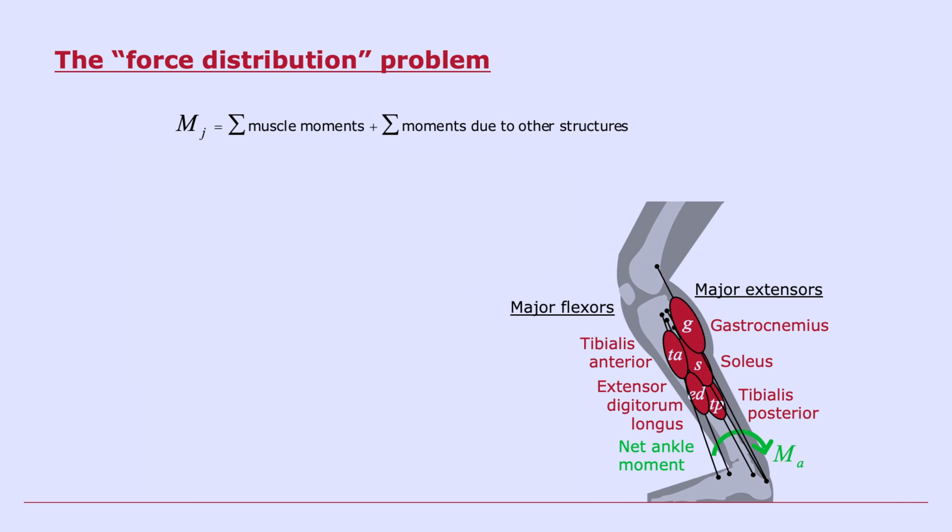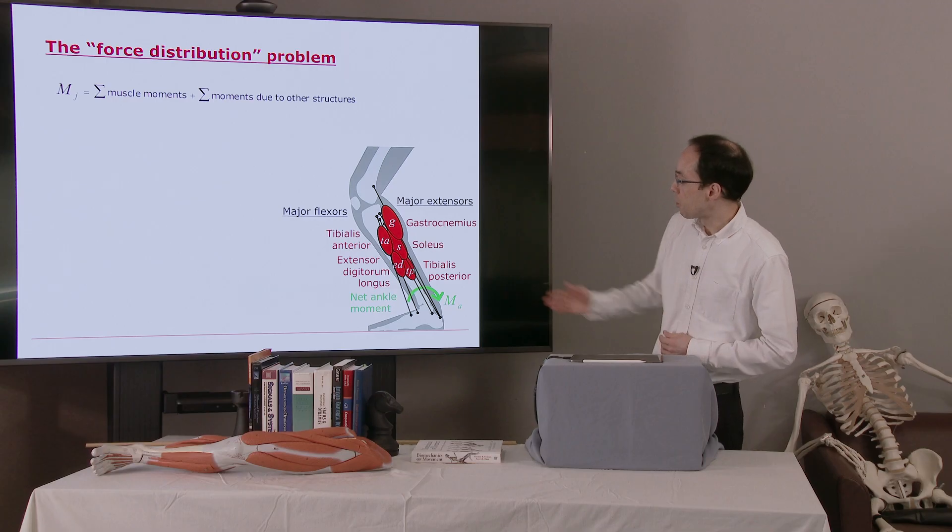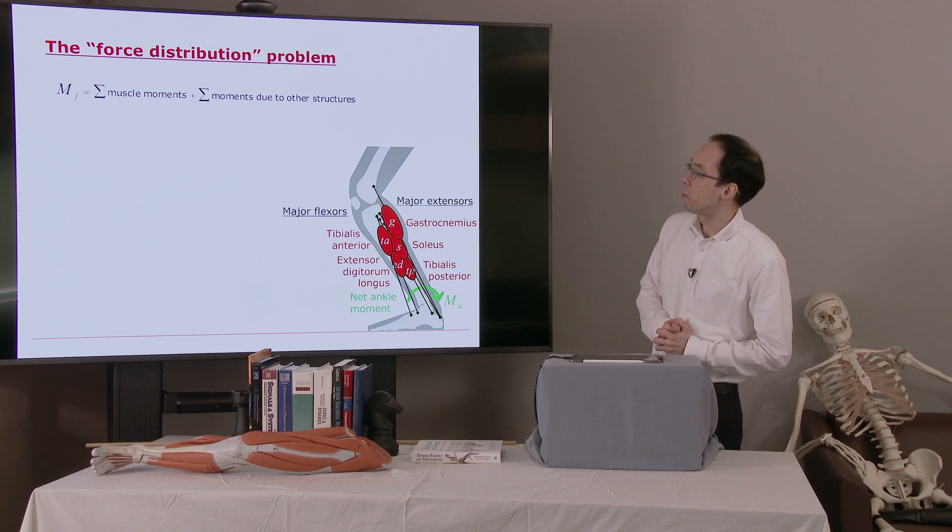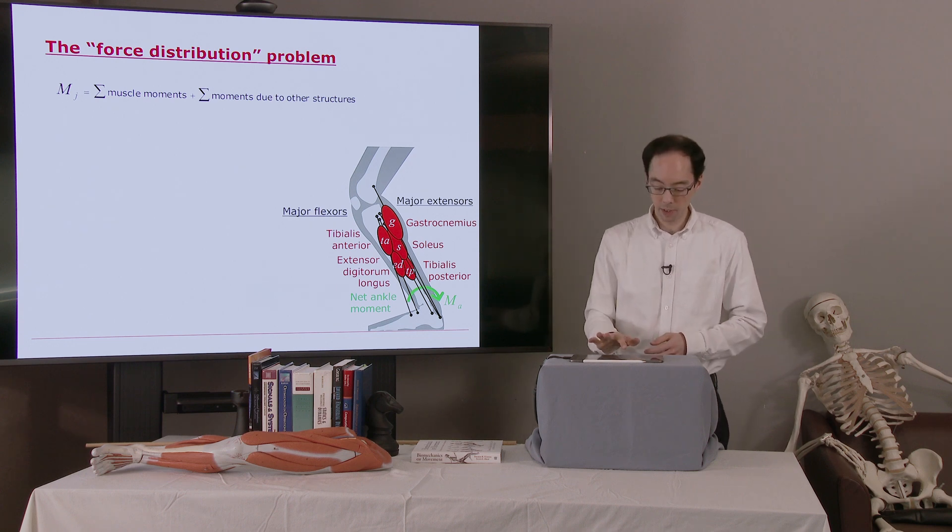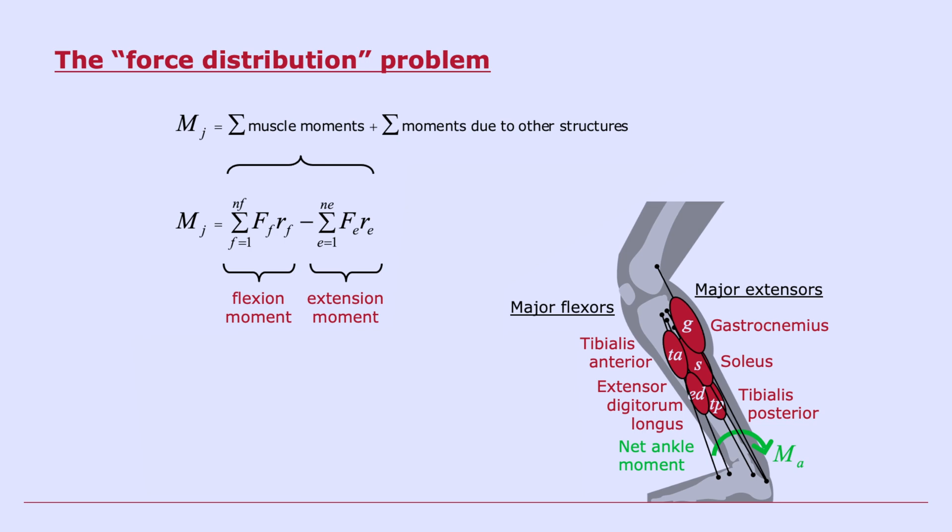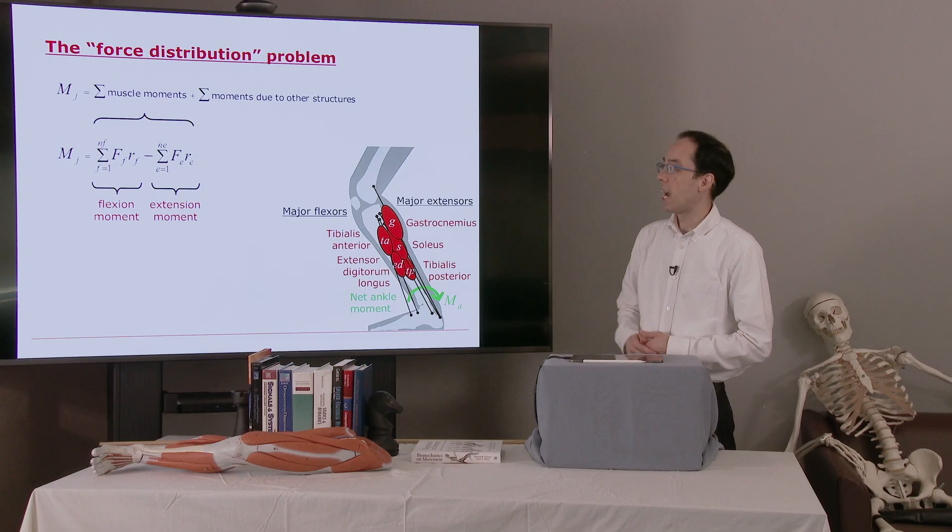So we have this force distribution problem or force sharing problem or muscle redundancy problem. The issue is that we have more muscles than degrees of freedom. Somehow we have to figure out, for these muscles, how much force was each one generating. So the moment generated about the ankle will be the sum of all the muscle moments plus the sum of moments due to other structures. We'll neglect the other structures for now, just to simplify the problem a little bit. So the sum of the muscle moments will be the sum of the contributions from all the flexors and the sum of all the contributions from the extensors. They're acting in opposite directions, of course. We have that negative sign there. NF is a number of flexors and E's number of extensors.